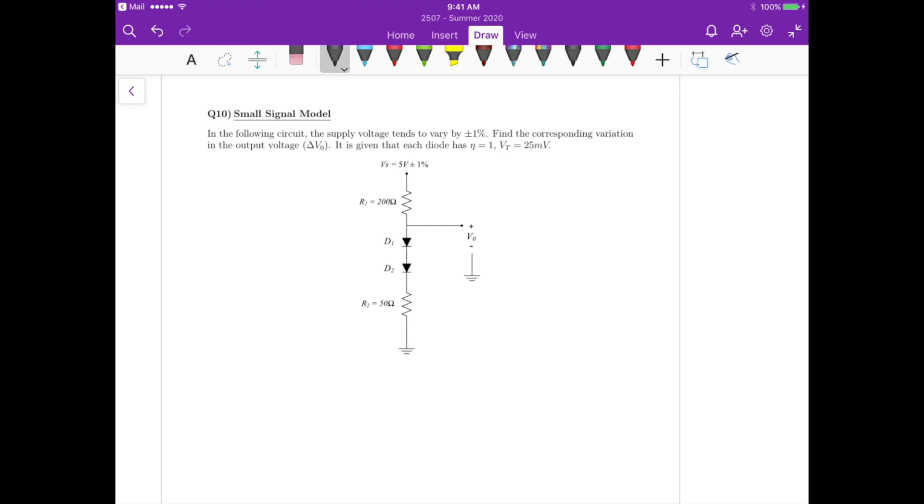So the circuit that we have here, we can remove the, well there's no small signal voltage, so we just ignore the plus or minus one percent voltage variation. And then we are left with a circuit that looks like this.